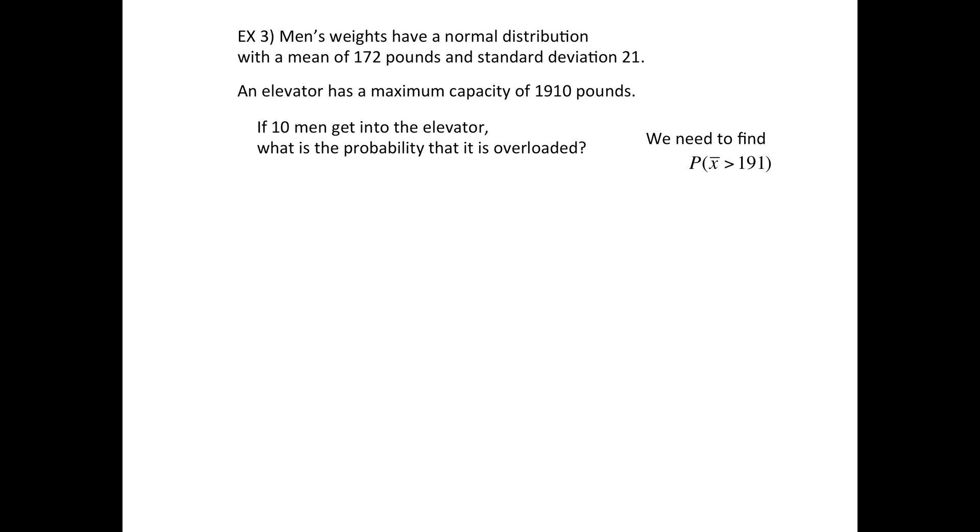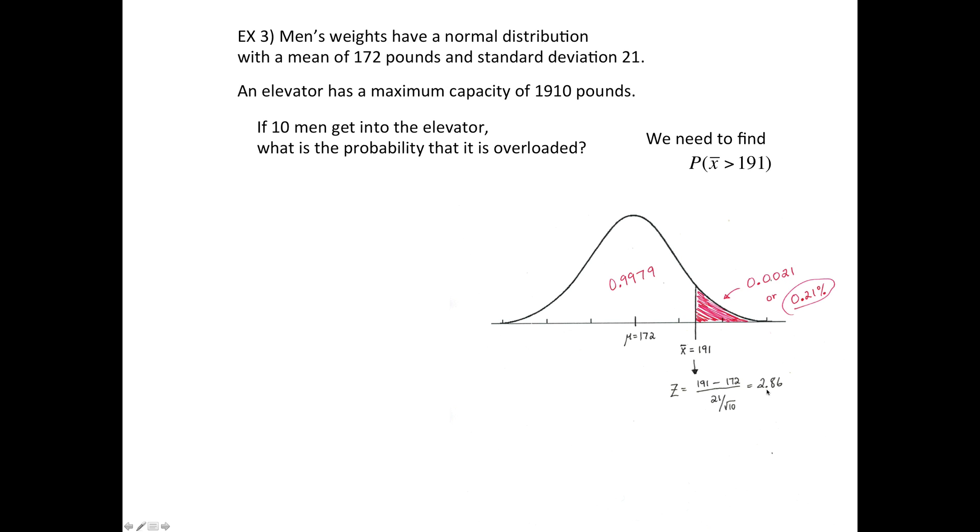Well since it's 10 guys and that's a total of 1,910 pounds, basically if they all average more than 191 pounds, then for 10 guys it's going to be overloaded. So what we really need to do is find out what's the probability that their average is over 191 pounds. So draw the picture, bell-shaped curve, 191, you do the z-score, and again because it's 10 guys you divide by the square root of 10 and get a 2.86. So we then look up 2.86, which is 99.79.